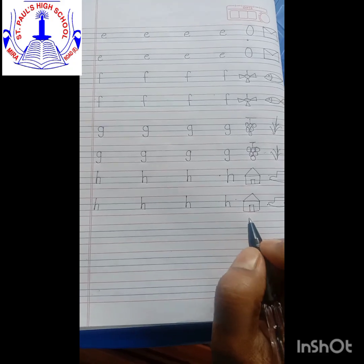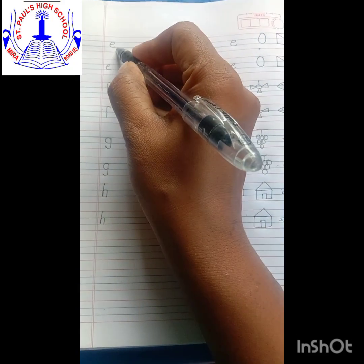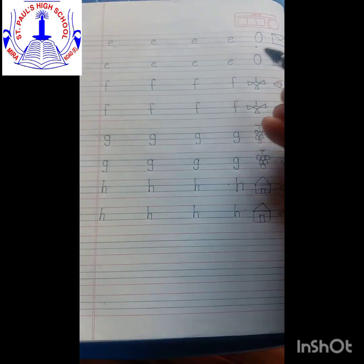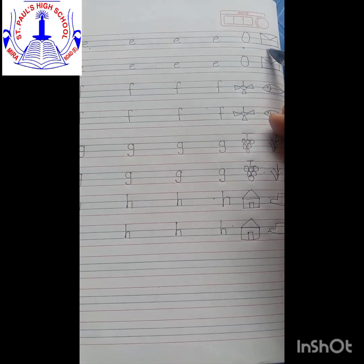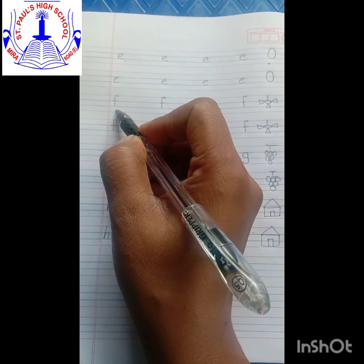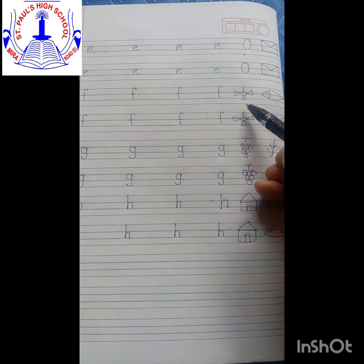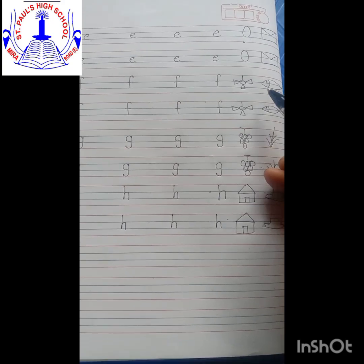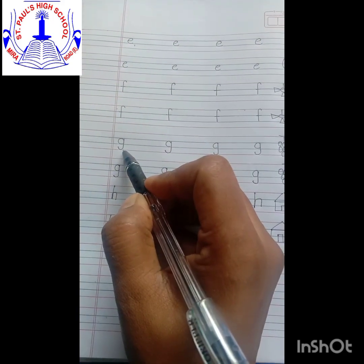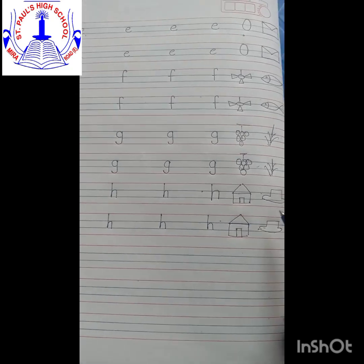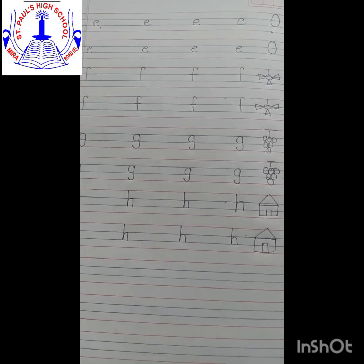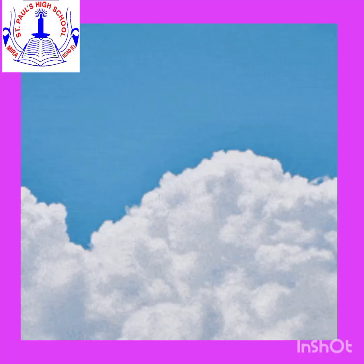Let's have a revision children. Small e: E says 'eh', egg, envelope. F says 'f': fan, fish. G says 'g': grapes, grass. H says 'h': hut, hat. Well done children. Bye bye children.